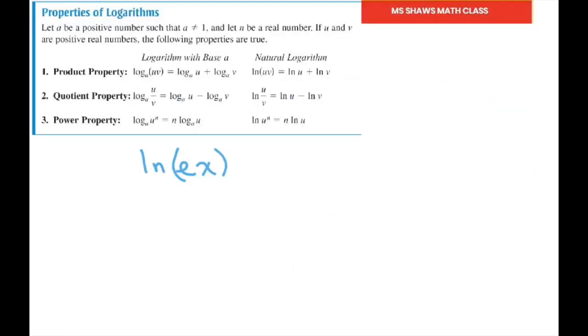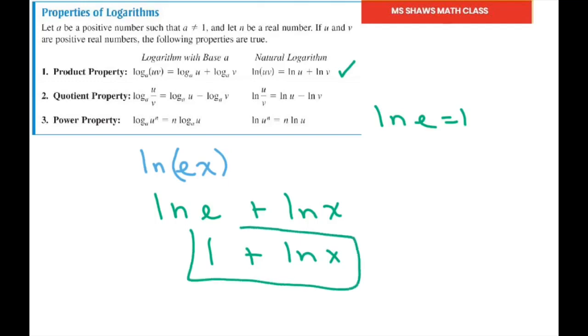This is our first one. And so we're going to expand using our product property. So we have ln of E plus ln of X. Well ln of E equals 1. So you have 1 plus ln of X. And you are expected to simplify this.